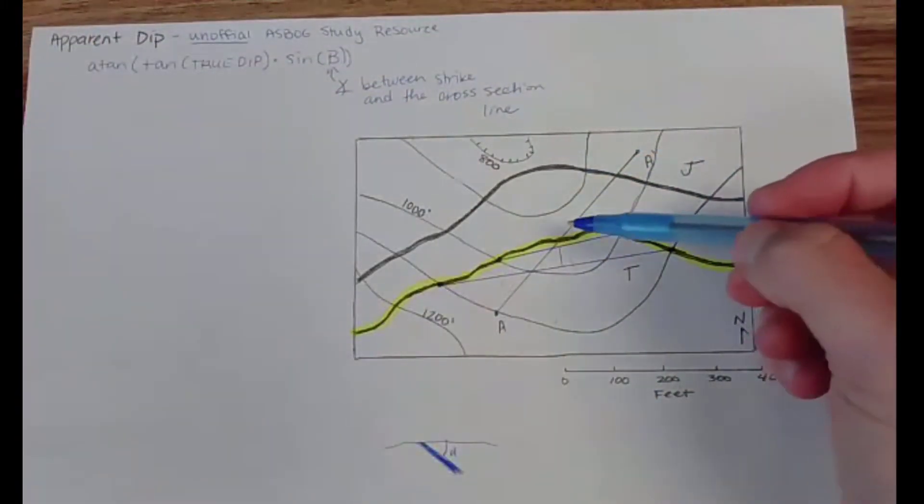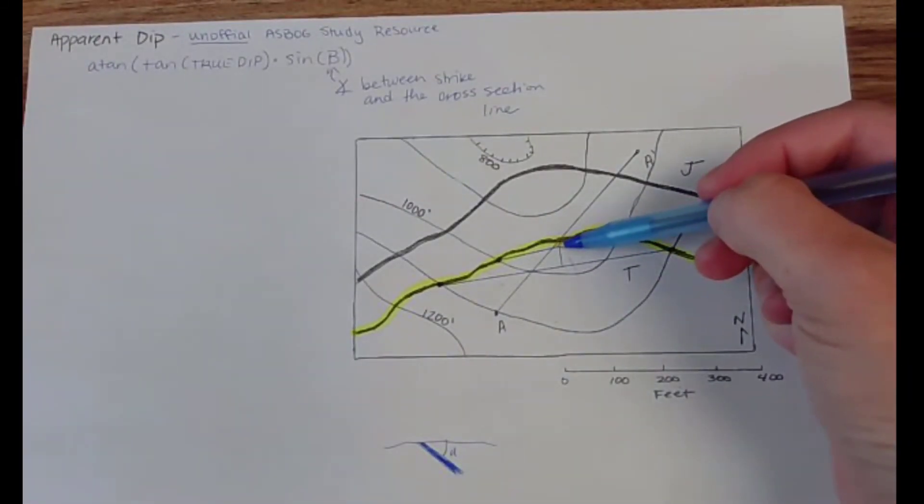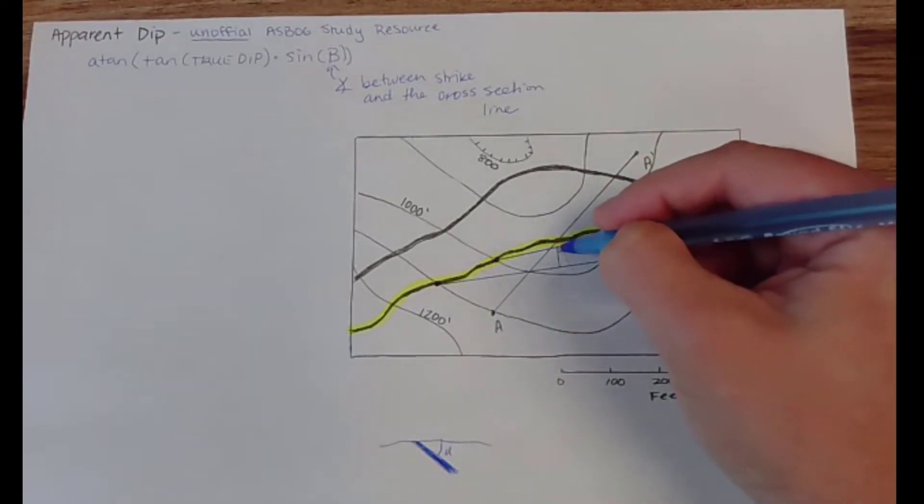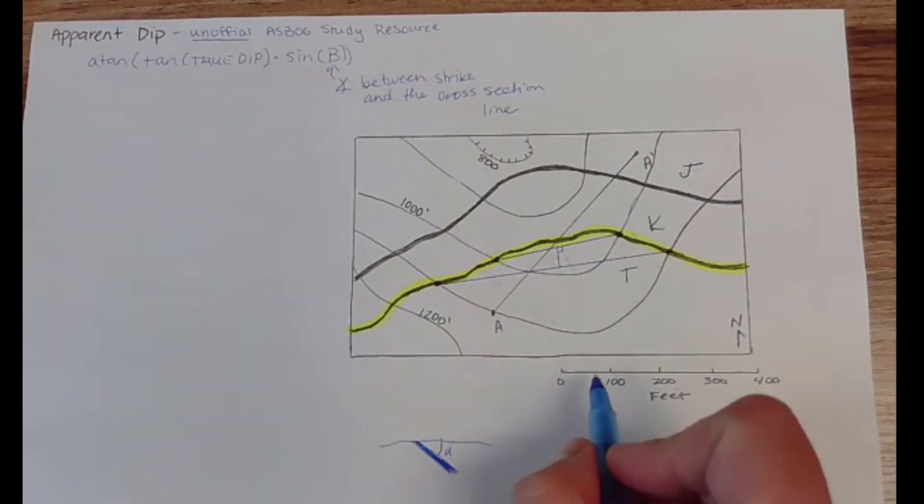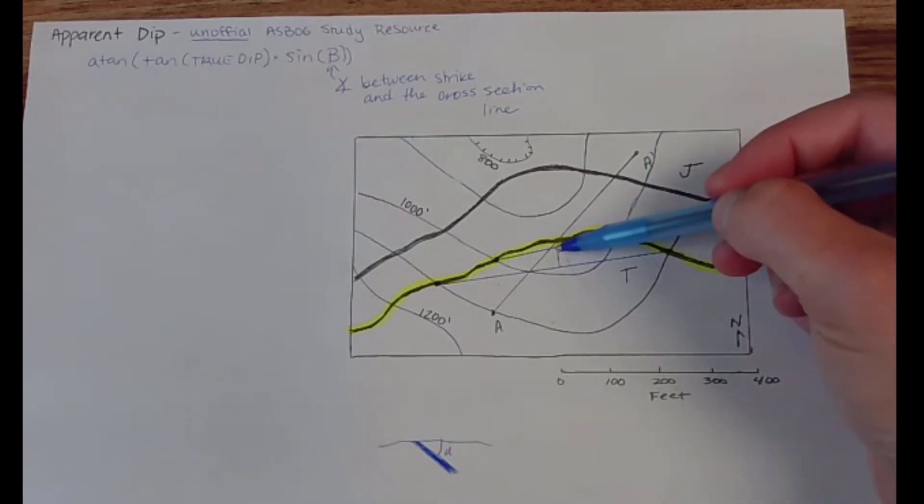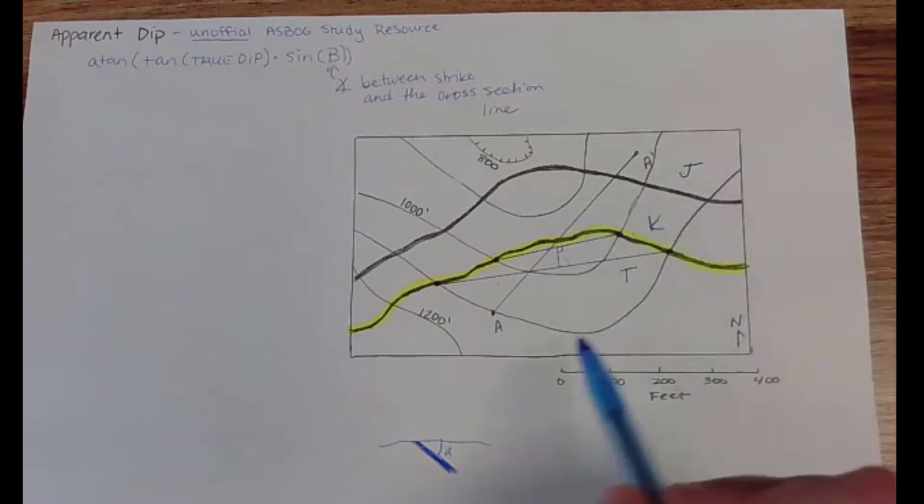So what that means is if I come in here and draw a perpendicular line between the two like this, it means that if I were able to walk through the air from this point to this point I would be walking perpendicular to strike some horizontal map distance which I can get from my scale, but I would be walking perpendicular to strike some horizontal map distance and I would be going from 1100 feet in elevation to 1200 feet in elevation.